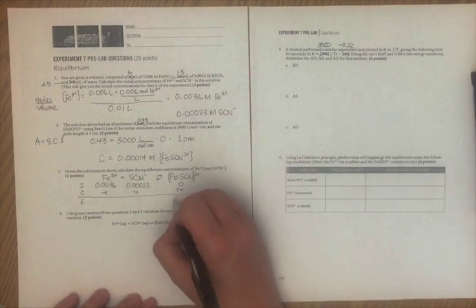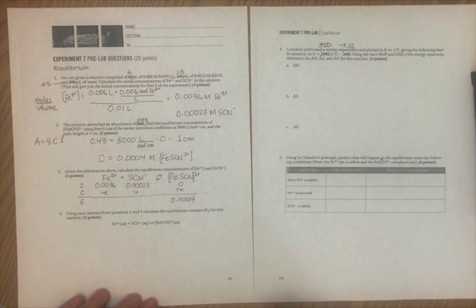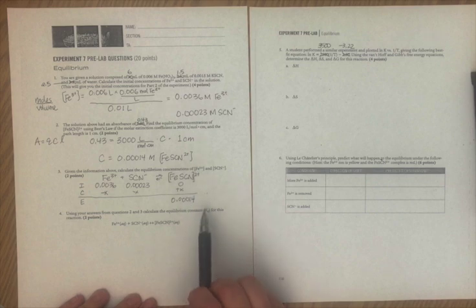That's convenient, because we actually know this number, we just calculated it. That's our molarity of our complex ion at equilibrium. We got that from the absorbance, because remember this has that distinctive red color.